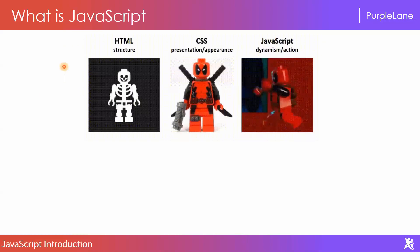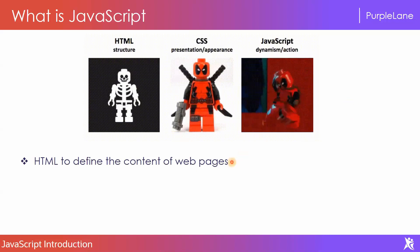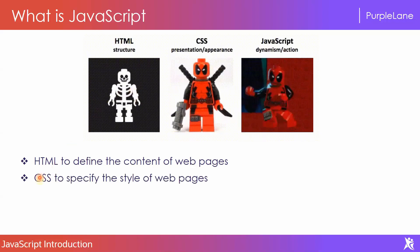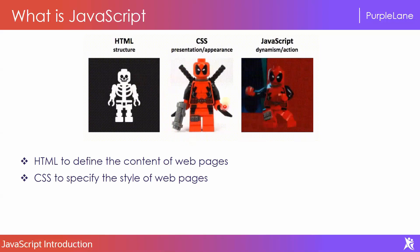Now let's see what the main use of JavaScript is. Here you see three images — HTML, CSS, and JavaScript. HTML is used to define the contents of web pages; it provides different types of tags like header tags, table tags, and paragraph tags to show content. Once you have the HTML, CSS acts as a makeup kit for your web page — using CSS we can apply styles to the content and convert plain HTML into a beautiful page.